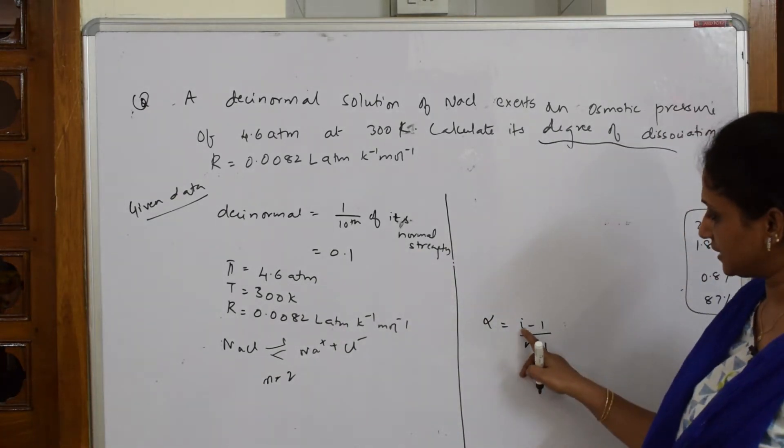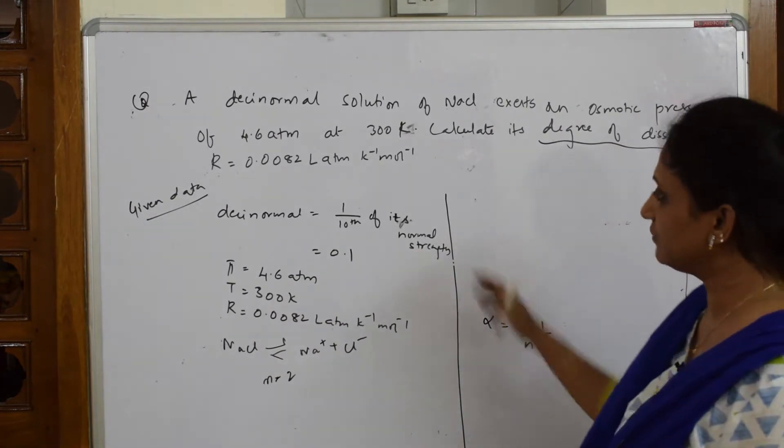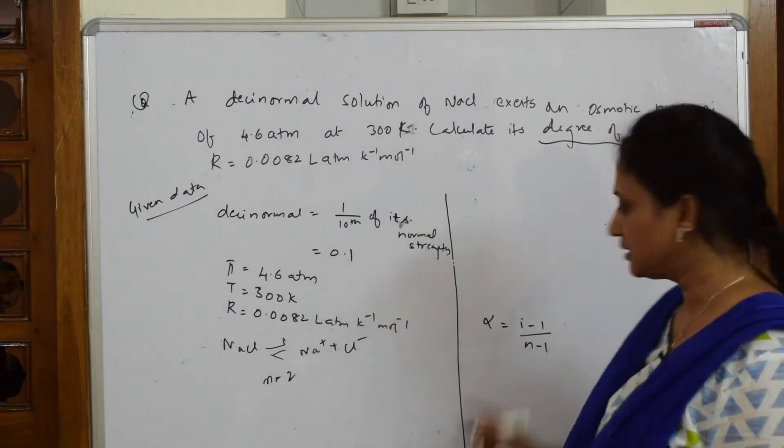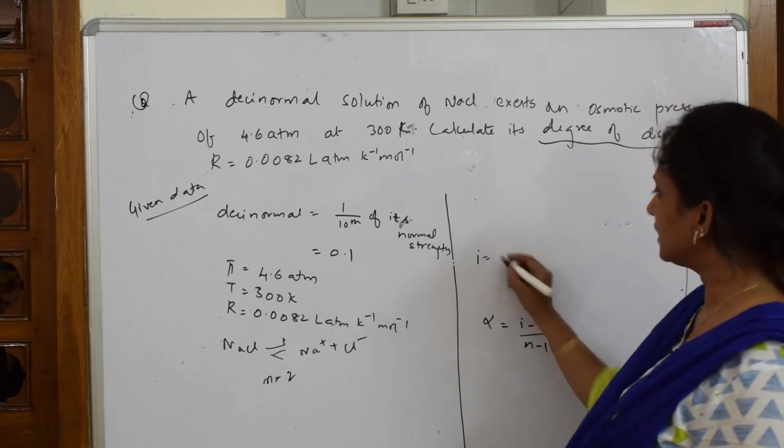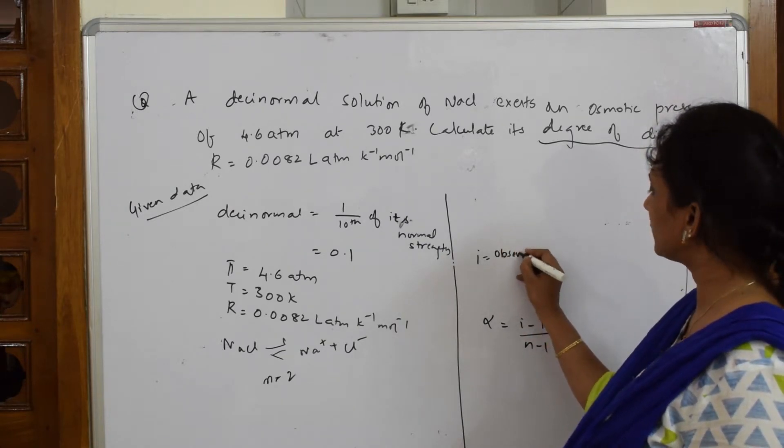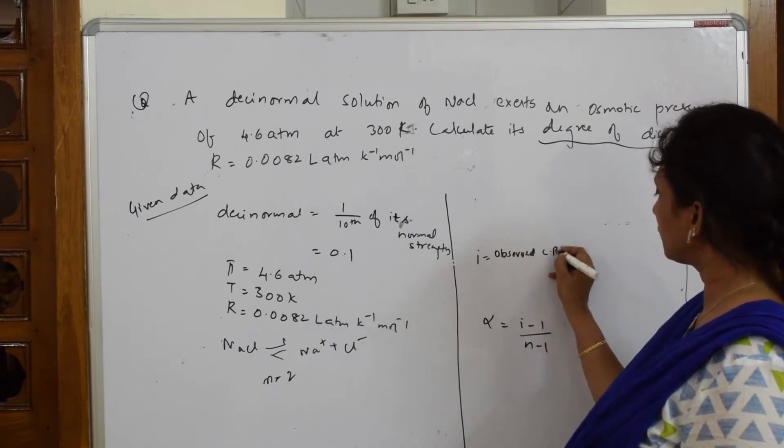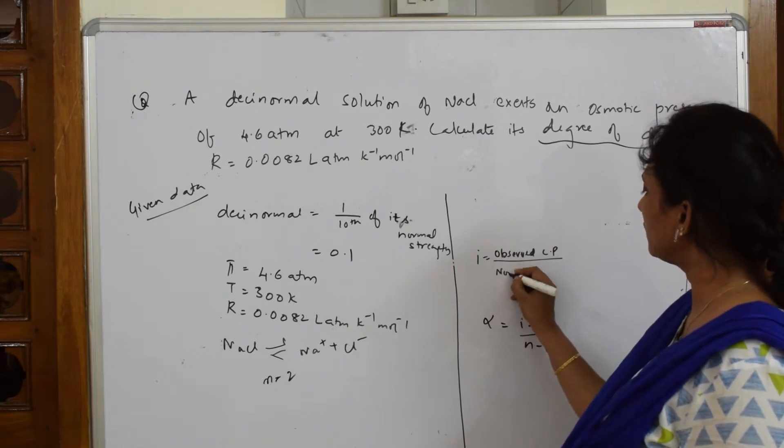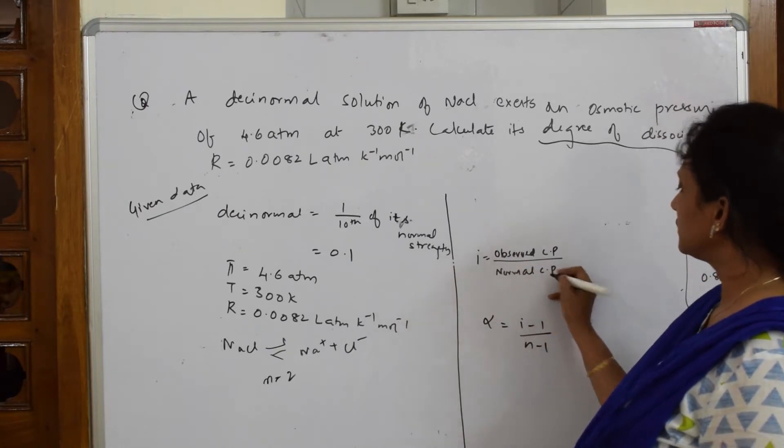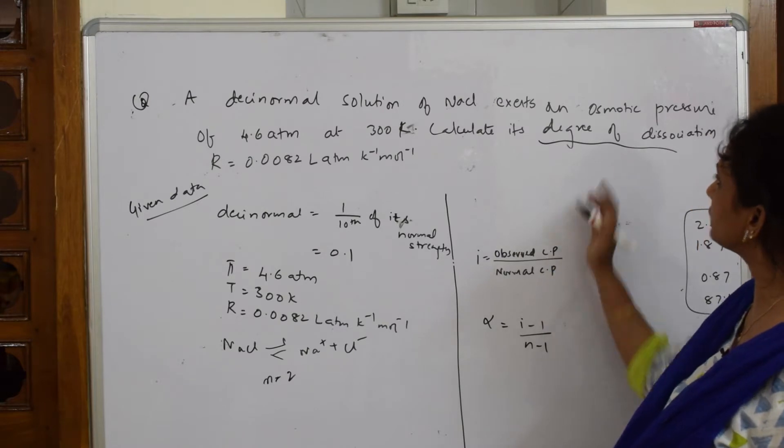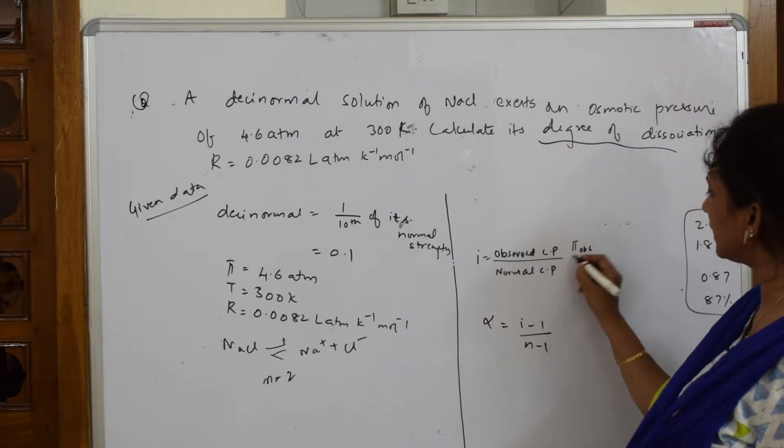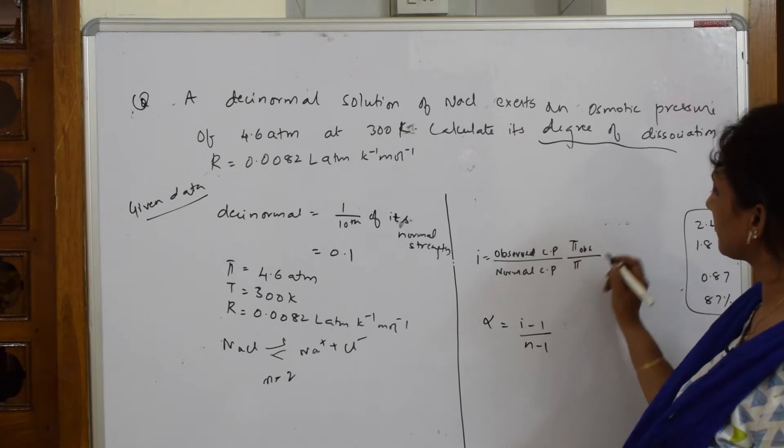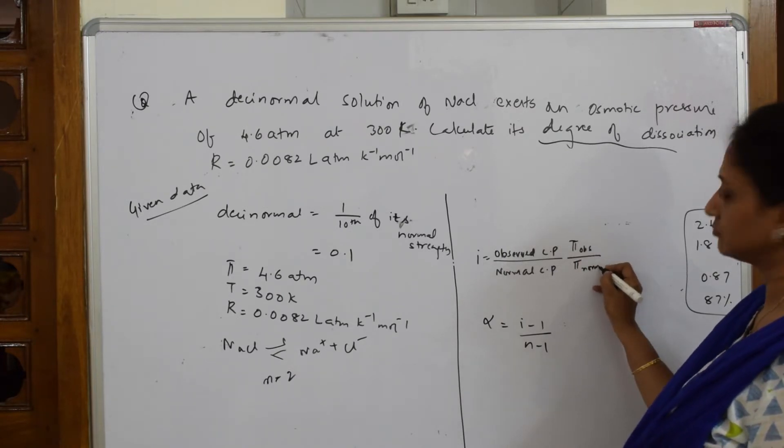Let us come back and see, do I have i? What is the formula for i? We do not have i anywhere in the data. So i equal to, we very well know i is equal to observed colligative property by normal colligative property. So what is observed? Nothing but here, the colligative property which we are using is osmotic pressure, π observed by π normal.